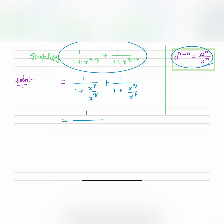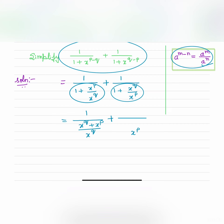Now in this denominator, let us take the LCM. So LCM is x to the power q, and we will get x to the power q plus x to the power p. In this case also let us take the LCM — it is x to the power p, then x to the power p plus x to the power q.